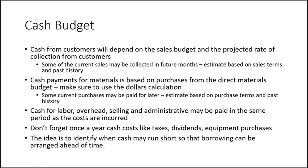Even though there's technically a short delay between when employees work and when you pay them, we generally treat labor as occurring in the same accounting period because the lag is only a week or two. For an annual cash budget, don't forget one-time cash costs like taxes, dividends, equipment purchases, and insurance — insurance is sometimes paid once a year, and while we amortize it in accounting, we need the cash on hand when that payment is due.